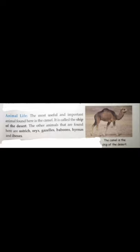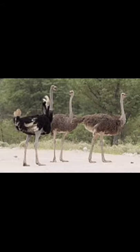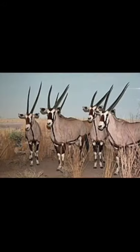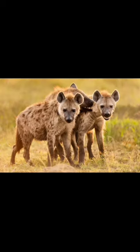The next topic is animal life. The most useful and important animal found here is the camel, called the ship of the desert. As we all know, camels can survive easily in desert conditions. Other animals found here include the ostrich, oryx, gazelles, baboons, hyenas, and ibexes.